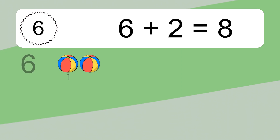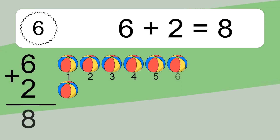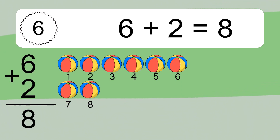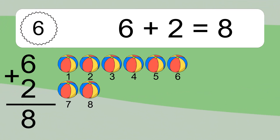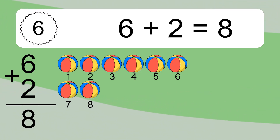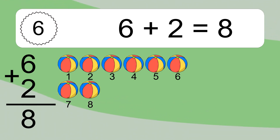6 plus 2 equals what? 6 plus 2 equals 8. Let's count it: 1, 2, 3, 4, 5, 6, 7, 8.